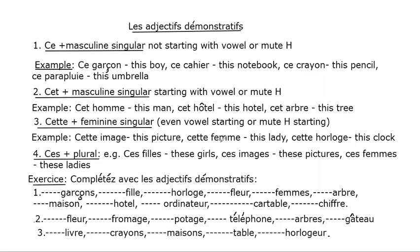The third type is 'cette', used with feminine singular nouns — even if the word starts with a vowel, if it is feminine we use 'cette'. Examples: cette image (this picture), cette femme (this lady), cette horloge (this clock). The last type is 'ces', used with all plural nouns. 'Ces' is pronounced like 'se' before a consonant and like 'sez' before a vowel or mute H. Examples: ces filles (these girls), ces images (these pictures), ces femmes (these ladies).